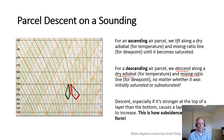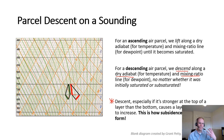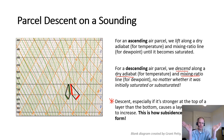The key point here is that descent — especially if it's stronger at the top of a layer than at the bottom, as commonly seen in the mid-troposphere with the subtropical ridge — causes a layer's stability to increase. This is ultimately how subsidence inversions form. It is that subsidence in the descending branch of the Hadley cell circulation that gives rise to the typical capping or subsidence inversion structure we see associated with the trade wind inversion.